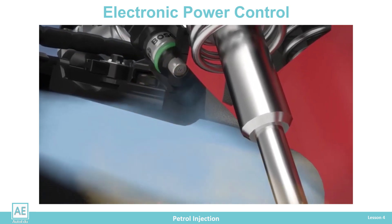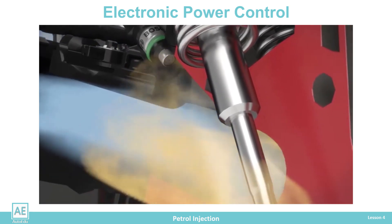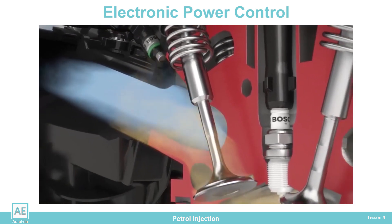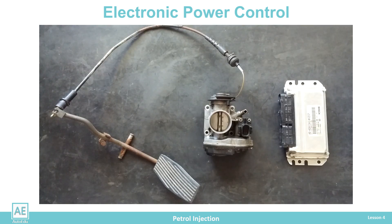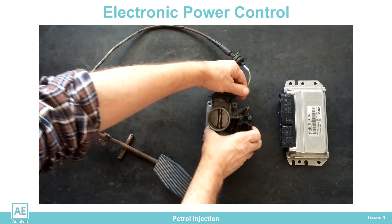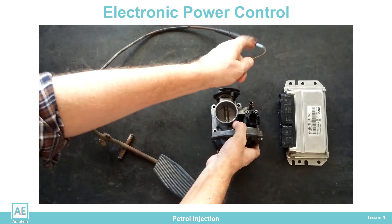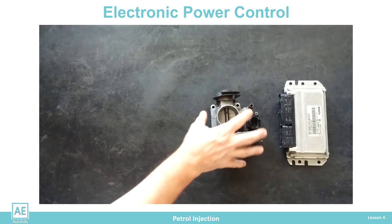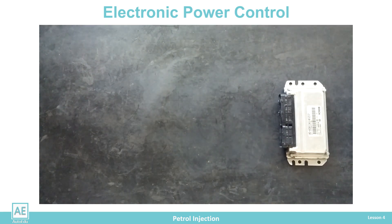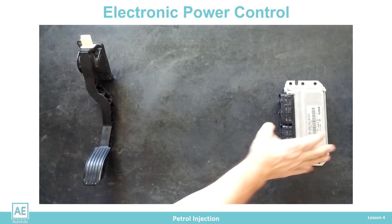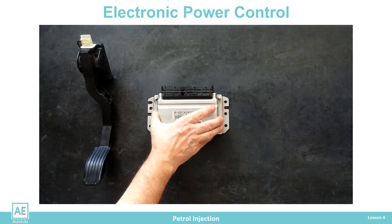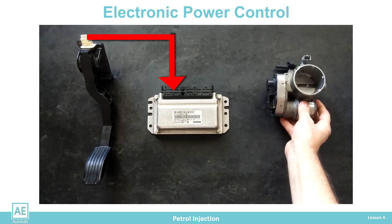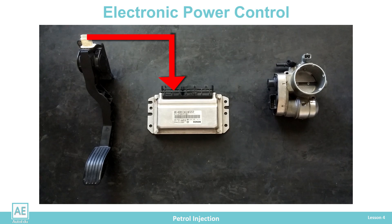For torque regulation in all engine operating states, the control unit should have control of the throttle position adjustment over the entire range. That's why a new system was designed where, instead of a mechanical connection between the accelerator pedal and the throttle valve, electronic control of the positioning of the throttle is introduced. Based on the driver's wishes and other requirements of the engine and vehicle, the ECU sets the throttle valve in the required position via the electric motor.